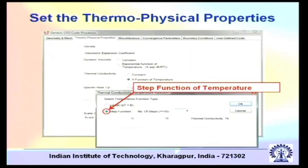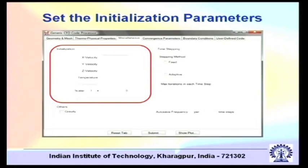You can also have a step function of temperature as one of the options. If none of these fit — for example, if you have a property variation which is neither constant nor linear nor piecewise constant, but some other variation — then you have to write a user defined function for that, and we will see later on how to write user defined functions.